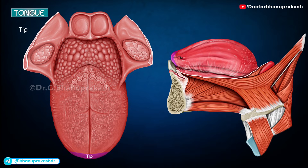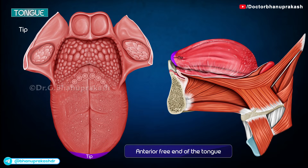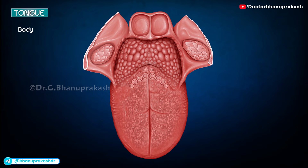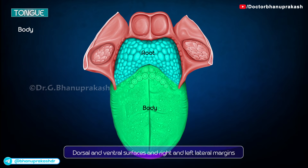The tip is the anterior free end of the tongue, which touches the central incisors. The part of the tongue between the root and tip is called the body. It presents with dorsal and ventral surfaces and right and left lateral margins.